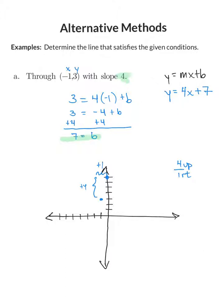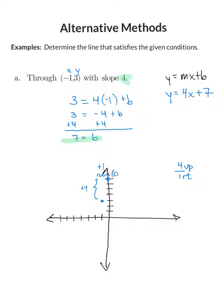Starting at negative 1, 3 and moving up 4 and to the right 1, we end up right on the y-axis. Counting up from the origin, we go 1, 2, 3, 4, 5, 6, 7, so the y-intercept coordinate is 0, 7 — meaning b equals 7. Plugging that back in, we get y equals 4x plus 7. Note that graphing is not a viable method if your y-intercept is not a nice integer point; if it's a fraction, it's very hard to determine exactly where it lands on the y-axis.